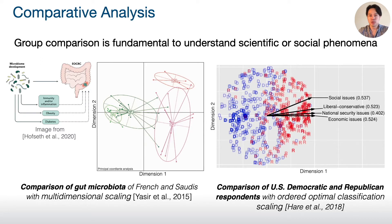Comparison of multiple groups is essential to understand any scientific and social phenomenon. For example, comparison is necessary to understand a bacterial composition that makes your colon healthy or unhealthy, or to understand opinion differences between different political party supporters.